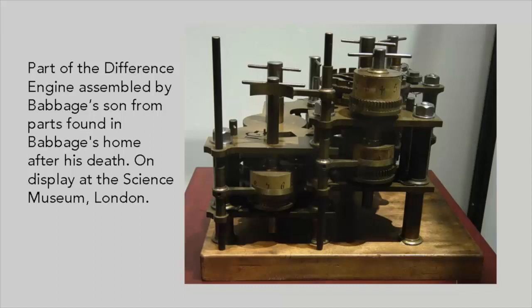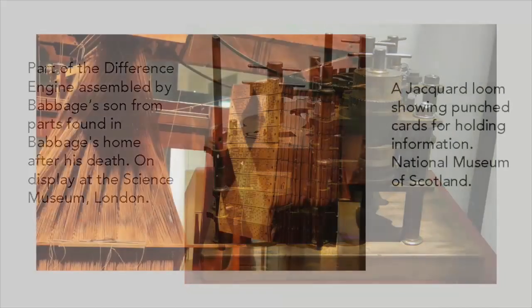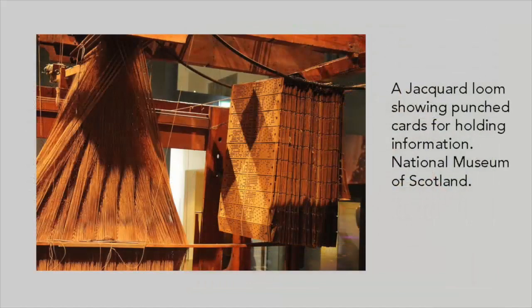The government had spent £17,000 and Babbage £6,000 of his own money on the project, when Babbage set his sights on something even more ambitious. He grasped that the basic mechanisms of the Difference Engine could be generalised to an all-purpose calculating machine programmable by a punch card mechanism like that of the Jacquard loom.